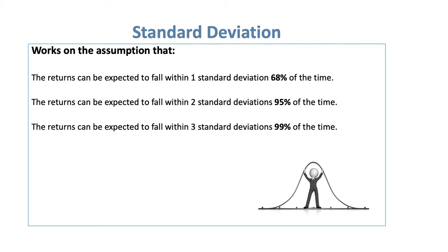Adding a second standard deviation — exactly the same amount either side — widens coverage to 95% of the time, which is obviously more likely to hold true than 68%. Three standard deviations covers nearly all occurrences. The bigger and wider you throw your net, the more likely you are to capture the expected returns from these investments. We'll look at an example next to finalise understanding of what we mean by these deviations.